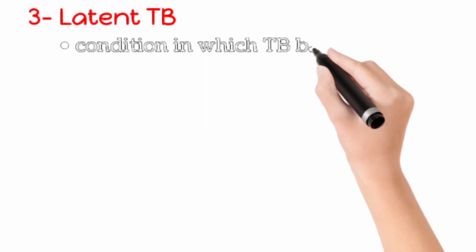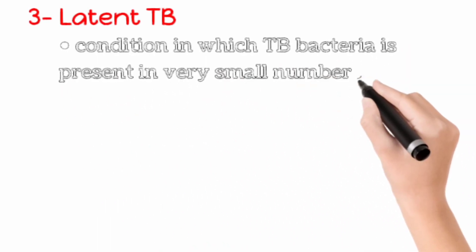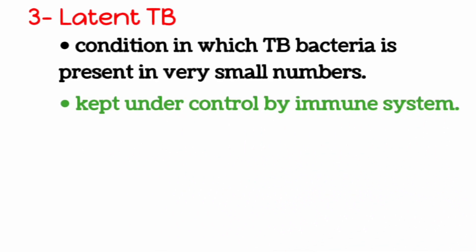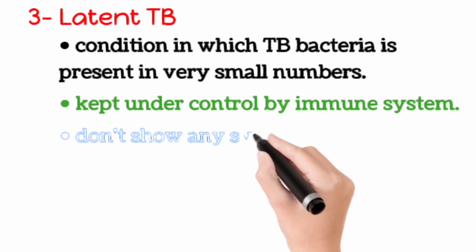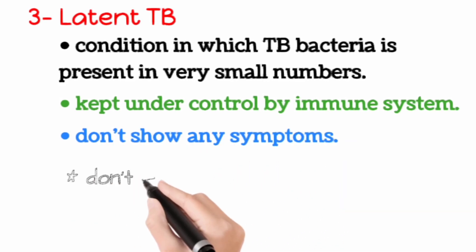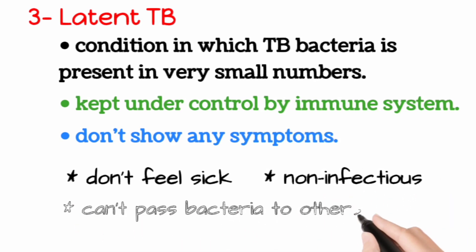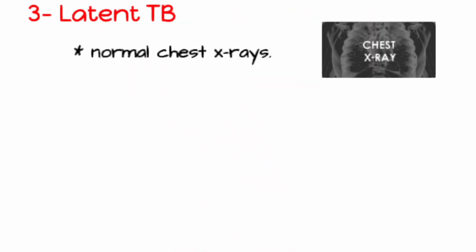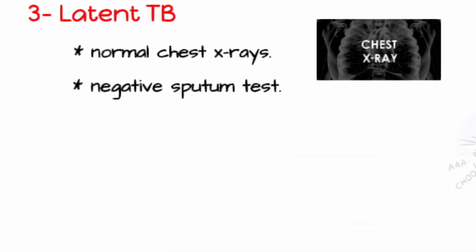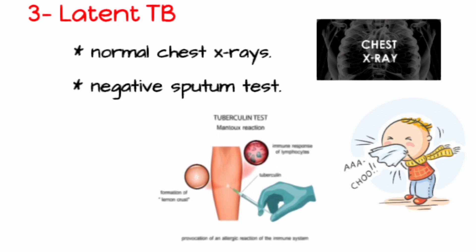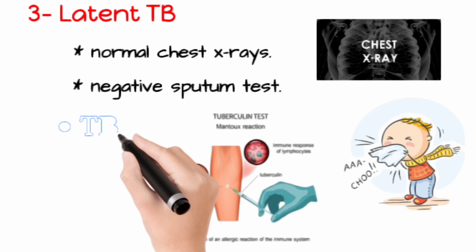Latent TB occurs when a person has the TB bacteria within their body, but the bacteria are present in very small numbers. They are kept under control by the body's immune system and do not cause any symptoms. People with latent TB do not feel sick and are not infectious — they cannot pass the bacteria on to other people. They will usually have a normal chest x-ray and a negative sputum test. It is often only known that someone has latent TB because they have had a test such as the TB skin test.